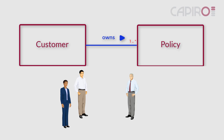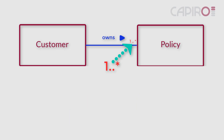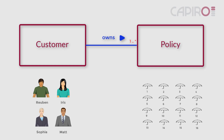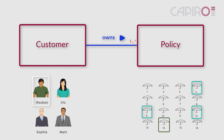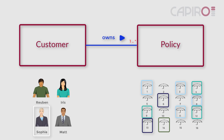By the way, it's normal to put two dots between the 1 and the star. We'll fast forward to a time when Iris has bought three policies — numbers 4, 9, and 12. Ruben owns just 1, Matt owns 2, and Sophia owns 4. The data model doesn't show this directly, but it does define the rules.